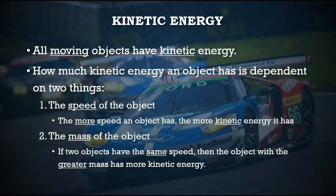Let's focus first on kinetic energy. It's the energy of motion, so all moving objects have kinetic energy. How much kinetic energy they have depends on two things: the speed of the object and the mass. The more speed an object has, the more kinetic energy it has. An object moving really quickly has more kinetic energy than something moving slowly. If two objects have the same speed, the one with more mass has more kinetic energy.